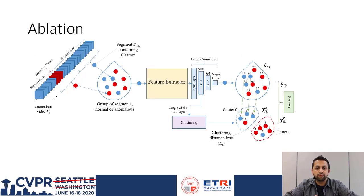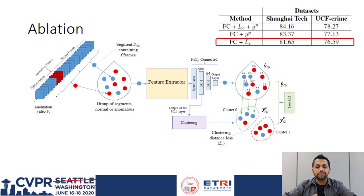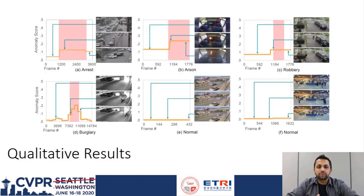For the ablation study of our proposed architecture, we removed several parts of the network and observed the performance drop in each experiment. When we removed the cluster distance loss, a 0.70% drop on ShanghaiTech dataset and a 1.14% drop on UCF Crime dataset was observed. When we removed pseudo-labels, a significant drop of 2.51% on ShanghaiTech and 1.68% on UCF Crime was observed. Overall, the network shows reasonably discriminative scores between anomalous and normal portions of a video.